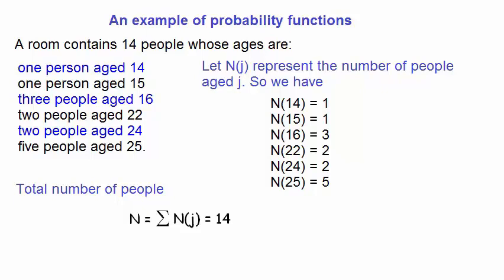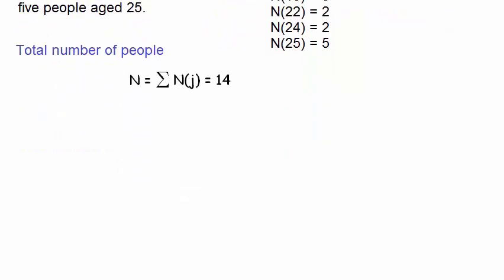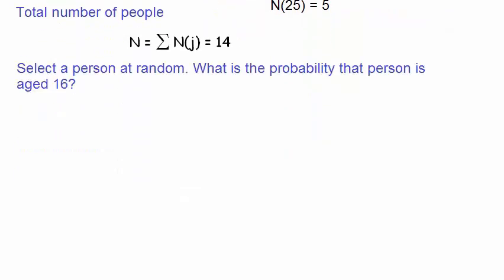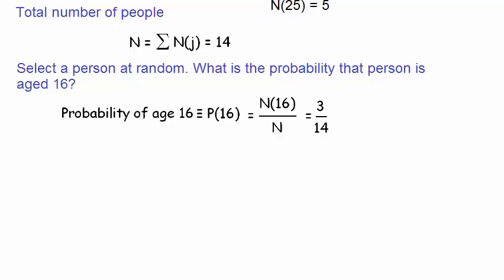Let's now say that we select a person at random from that room, and we ask the question, what is the probability that person is aged 16? We can symbolize the probability of selecting a person of age 16 as p in brackets 16. We can write this as the number of people that are aged 16 divided by the total number of people. In our case, there were 3 people aged 16, out of a total of 14 people. So we say that the probability is 3 out of 14, or 3 on 14.